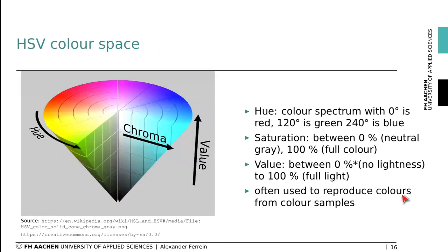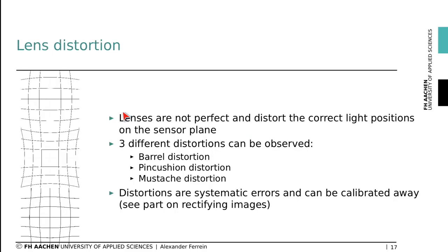Another color space is HSV, where color information is arranged at different angles: red at zero degrees, green at 120, and blue at 240. The saturation goes from a neutral gray at center to full color at the outer rim of the disc, and the value axis ranges from no light to full light.